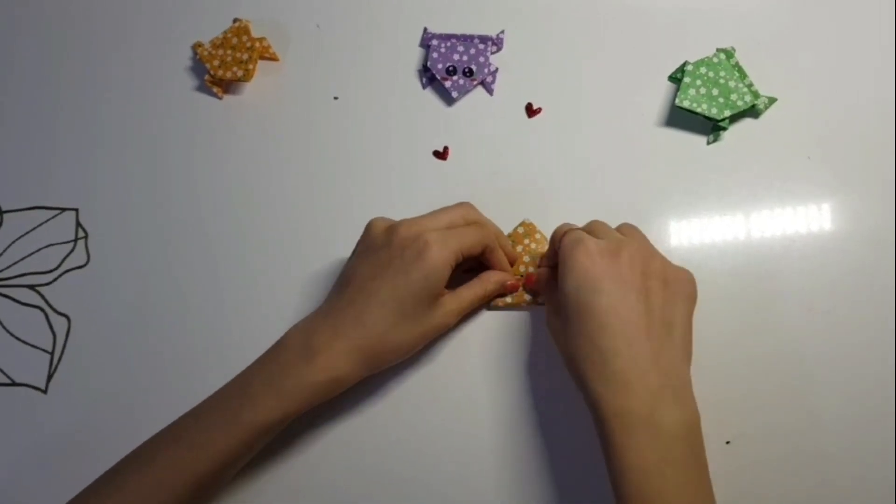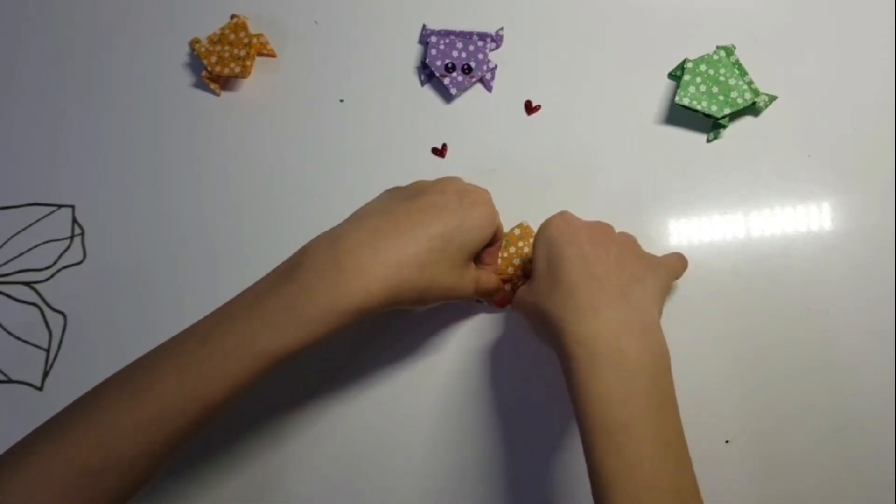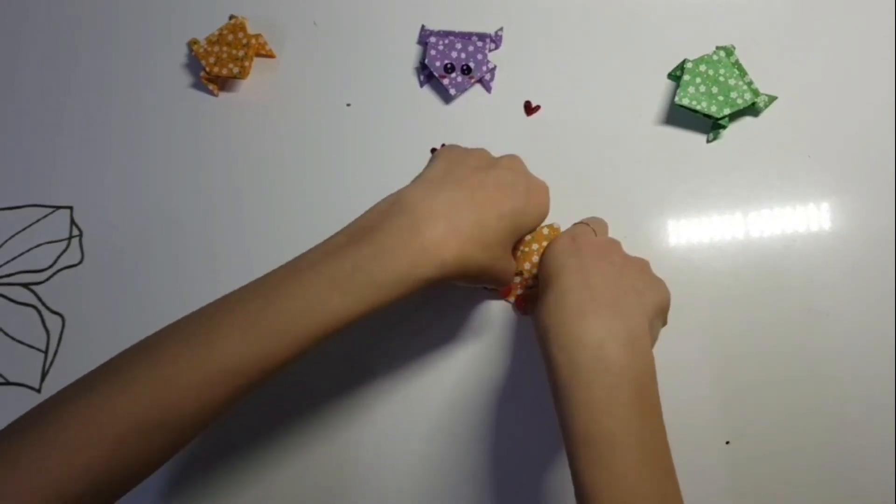From here, take the flaps and fold them down to make little triangles. Be sure to give them some pressure when doing this.